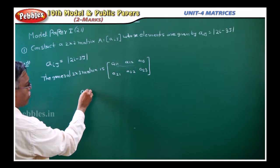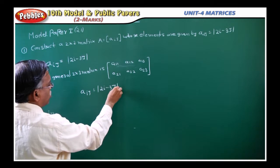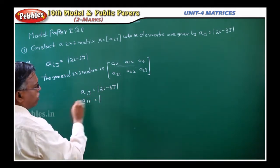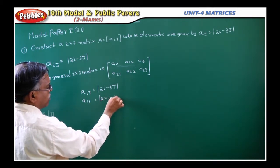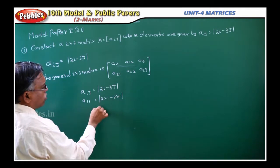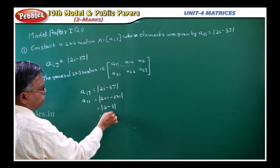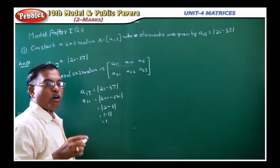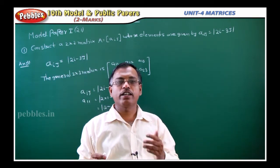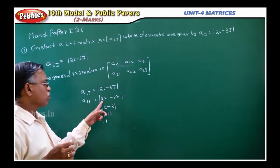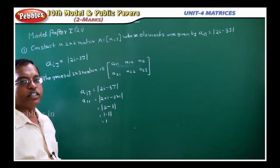What is A_ij? A_ij is equal to modulus of 2i minus 3j. So A₁₁: i value is 1, j value is also 1. So 2 into 1 minus 3 into 1 gives 2 minus 3, which is minus 1. Modulus of minus 1 is 1, because modulus is defined only for positive real numbers — even if you get a negative value inside the modulus, you take the positive. So A₁₁ equals 1.